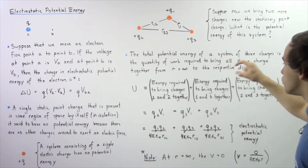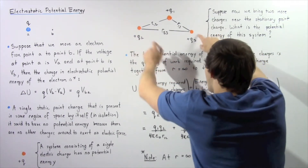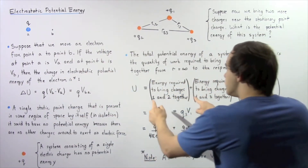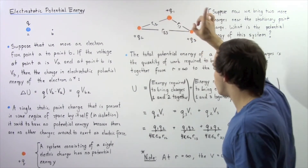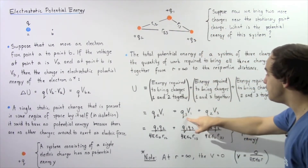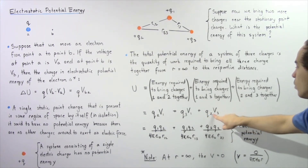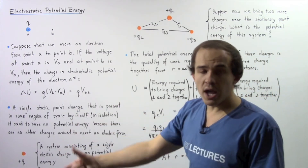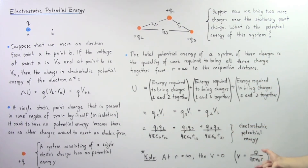Plus the energy required to bring charges 1 and 3 a distance R13 apart, plus the energy required to bring charges 2 and 3 a distance R23 apart. From the definition of electrostatic potential energy, this quantity equals Q2 multiplied by the voltage due to point charge Q1, plus Q3 multiplied by V1 (the voltage due to Q1), plus Q2 multiplied by V3 (the voltage due to Q3). At infinite distance the voltage is defined as zero, and so V1 and V3 are given by the Coulomb voltage equation.